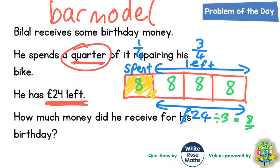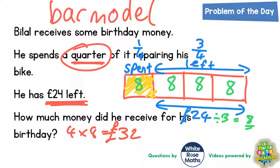So the problem is now straightforward. How much money did he receive at the start? If each quarter is worth £8, then 4 quarters would be 4 lots of 8, which is £32. The amount he received is the amount spent plus the amount left — £32. Final answer: £32.